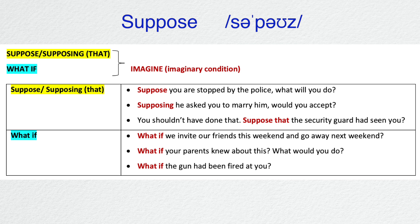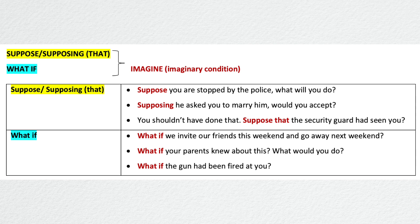Other conjunctions are 'suppose' or 'supposing that' and 'what if.' These can be used to introduce hypothetical situations. We use 'suppose,' 'supposing,' and 'what if' plus a present verb form to make suggestions about what might happen. For example: 'Suppose you are stopped by the police, what will you do?' or 'What if we invite our friends this weekend and go away next weekend?' When we are less certain, we use 'suppose,' 'supposing,' and 'what if' plus a past form to talk about future possibility. For example: 'Supposing he asks you to marry him, would you accept?' or 'What if your parents knew about this? What would you do?' Here, we imagine the opposite of the current situation and want to guess or learn possible results of this imaginary situation.